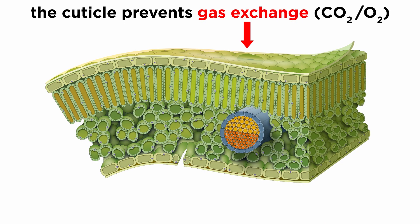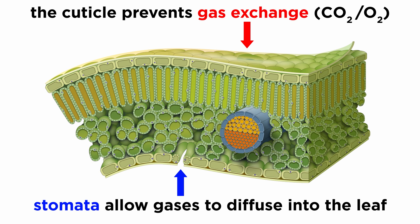However, while it reduces the loss of water, the waxy surface also prevents gas exchange between carbon dioxide and oxygen. As a result, terrestrial plants evolved pores on the leaf surface, called stomata, that allow the gases to diffuse from the air into the interior of the leaf.